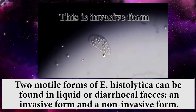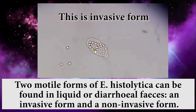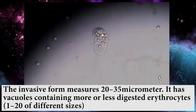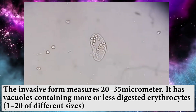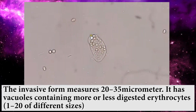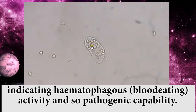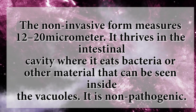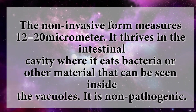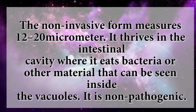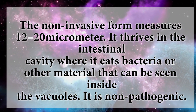Two motile forms of Entamoeba histolytica can be found in liquid or diarrheal feces: an invasive form and a non-invasive form. The invasive form measures 20 to 35 micrometers. It has vacuoles containing more or less digested erythrocytes (1 to 20 of different sizes), indicating hematophagous (blood-eating) activity and pathogenic capability. The non-invasive form measures 12 to 20 micrometers. It thrives in the intestinal cavity where it eats bacteria or other material seen inside the vacuoles, and is non-pathogenic.